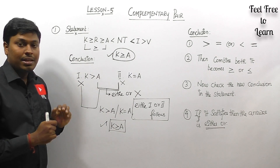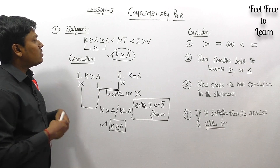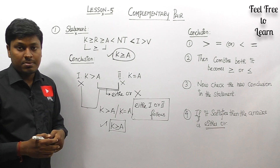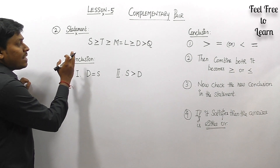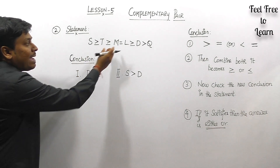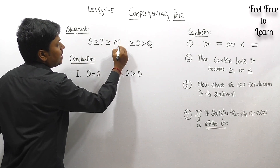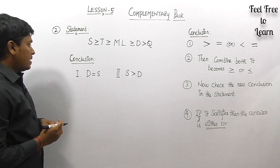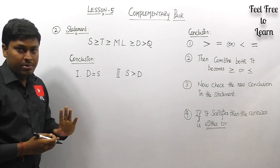Moving on to another example — question number two. The statement is: S ≥ T, T ≥ M, M = L, L ≥ D, D > Q. The conclusions are: conclusion one — S = D, and conclusion two — S > D.